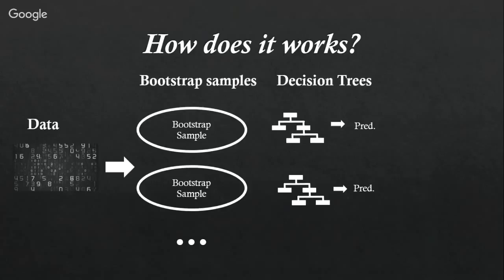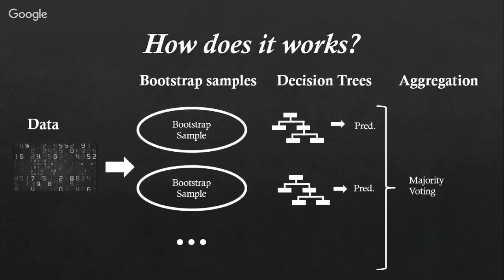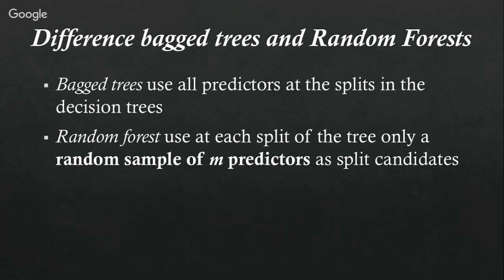You might now think this looks just like bagging trees, but there is a big difference. In bagging trees, all of the predictors are used at the splits in the decision trees, while in random forests, at each split of the tree only a random sample of predictors are considered as split candidates.